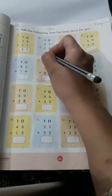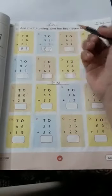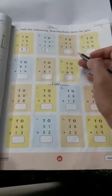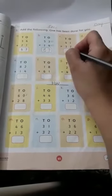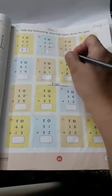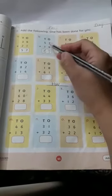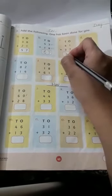Next, we have one plus seven. What comes after seven? Eight. So write eight. Next, four plus three, which is the same as three plus four, equals seven. Write seven here.